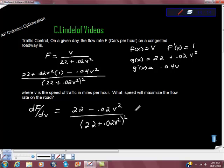And remember that when we're trying to find a maximum, we're looking for where the derivative goes to zero. So what we're looking for is where does this derivative, dF/dV, equal zero? So I'm going to solve the numerator, so I'm going to get 22 minus .02 V squared equals zero.